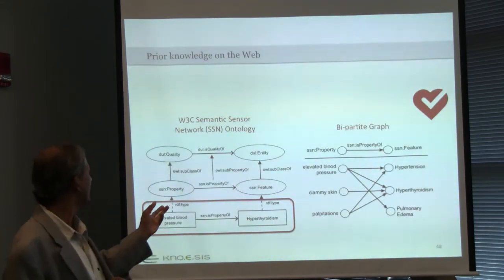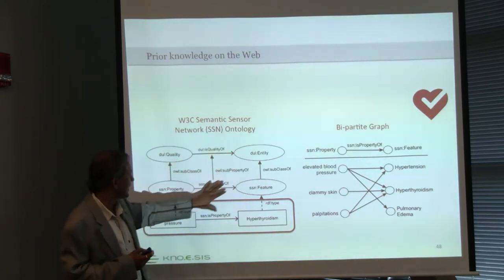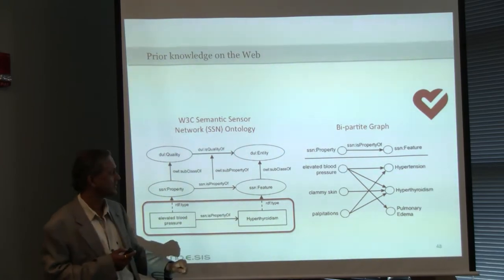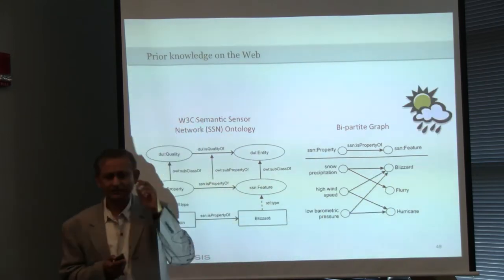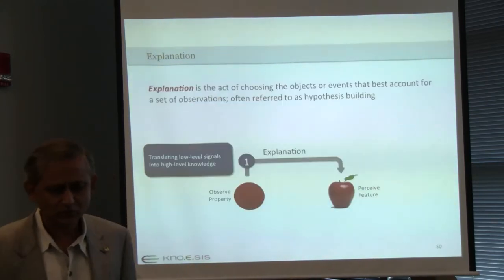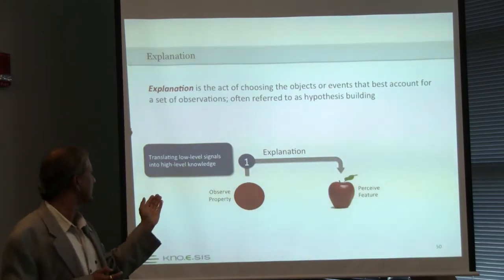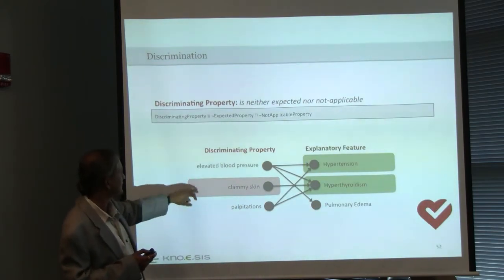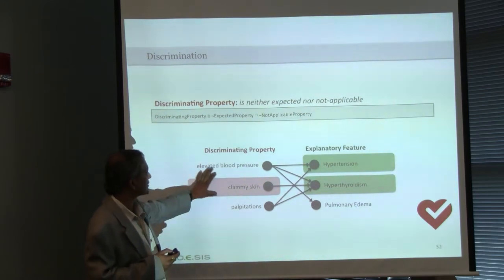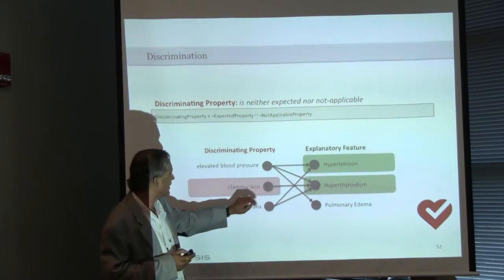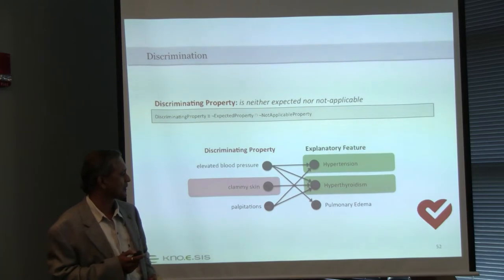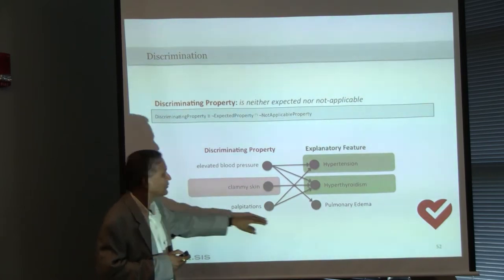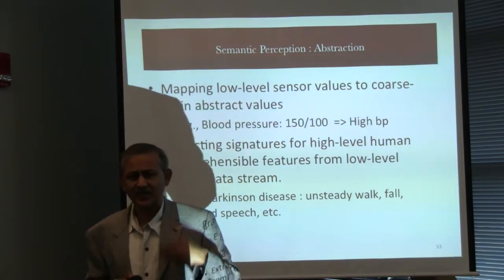Here I show how we can represent some of the concepts and facts using the SSN ontology. For example, we can describe that elevated blood pressure is a property of hypothyroidism, and describe that knowledge as a graph. You can describe other domains similarly. In the reasoning process you have explanation and discrimination — for example, based on elevated blood pressure alone it could be any one of several things. But when you also observe clammy skin, you can discriminate and say it is likely due to hypothyroidism. The system looks for relevant sensor data to discriminate and arrive at an understanding of the health-related situation.